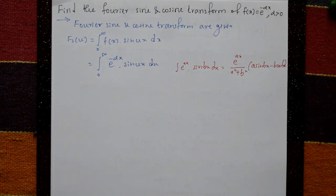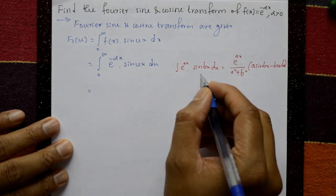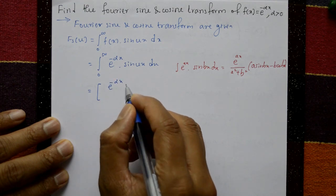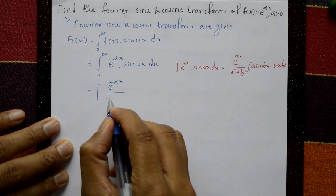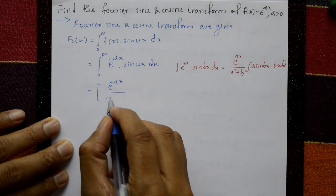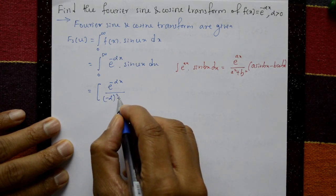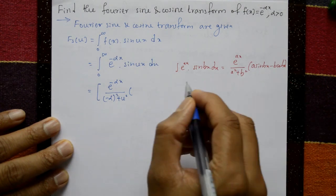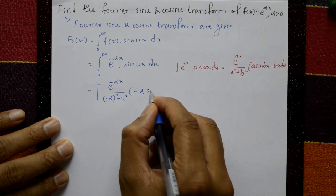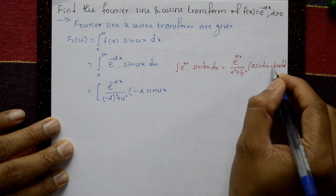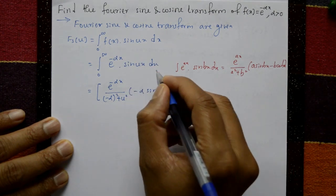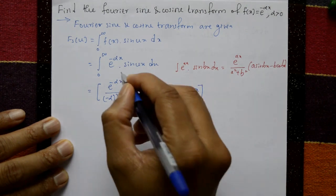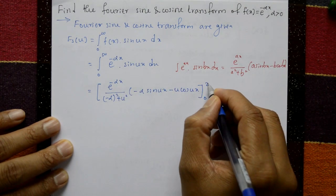Using this formula, after integration we get: e to the power minus alpha x upon (alpha squared plus u squared), into (alpha·sine(ux) minus u·cos(ux)), with limits 0 to infinity. Here a means minus alpha and b means u.